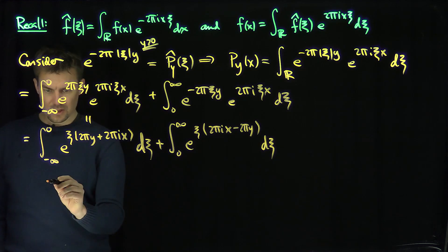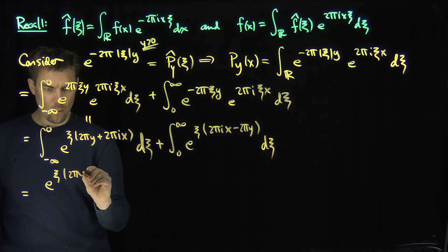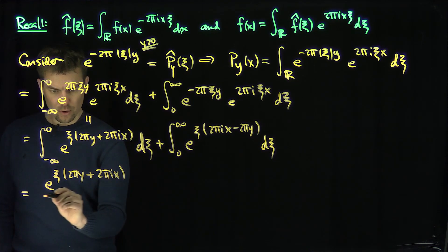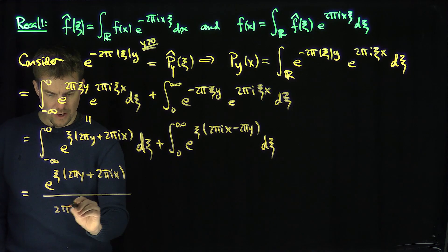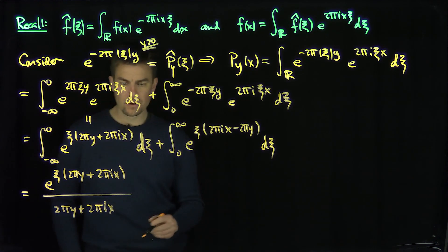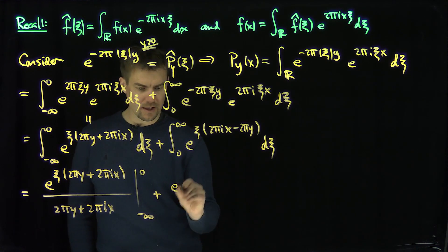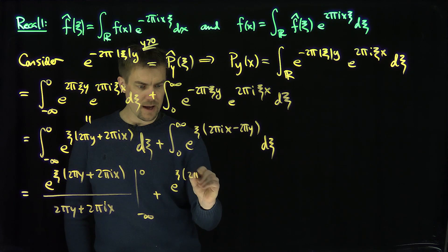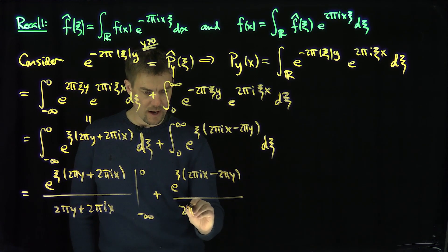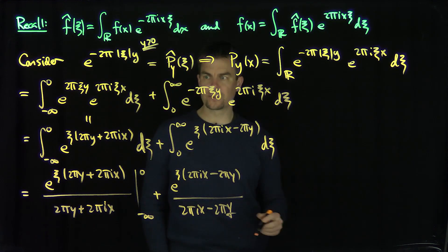Integrating, this gives e^{ξ(2πy + 2πix)} / (2πy + 2πix) evaluated from negative infinity to zero, plus e^{ξ(2πix - 2πy)} / (2πix - 2πy) evaluated from zero to infinity.